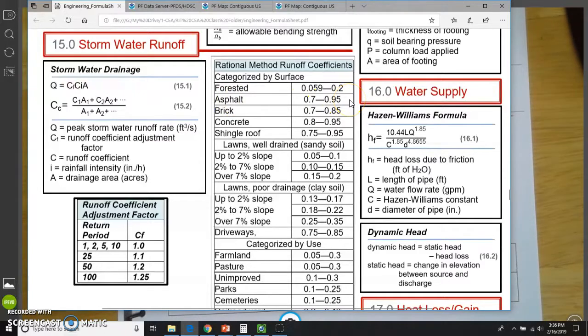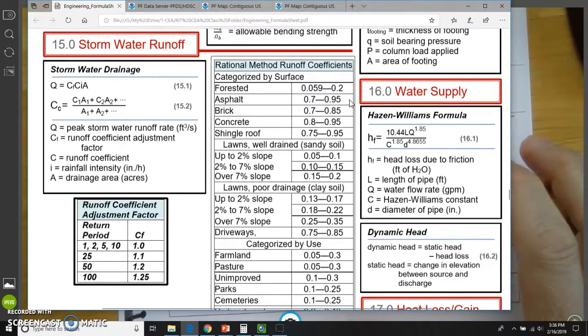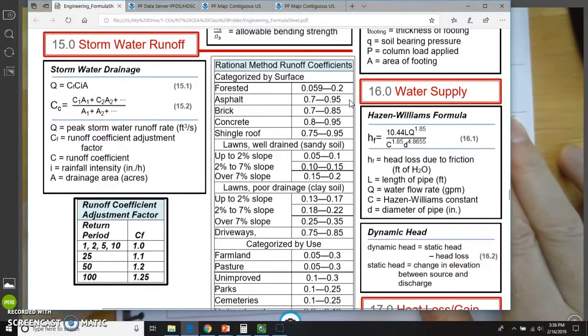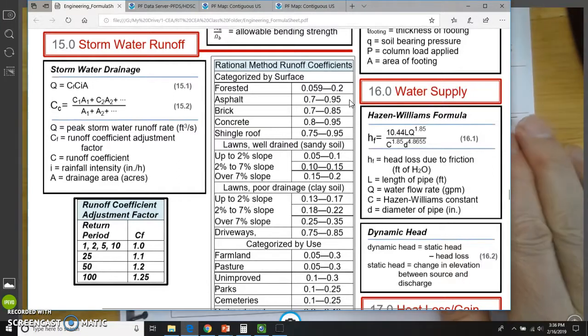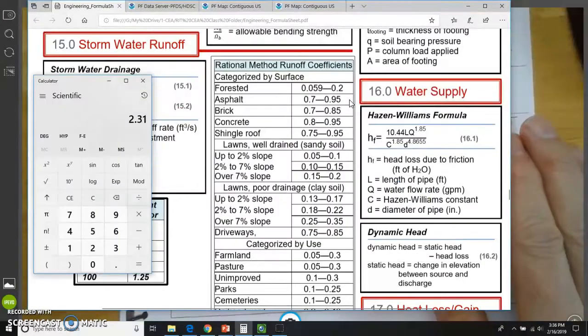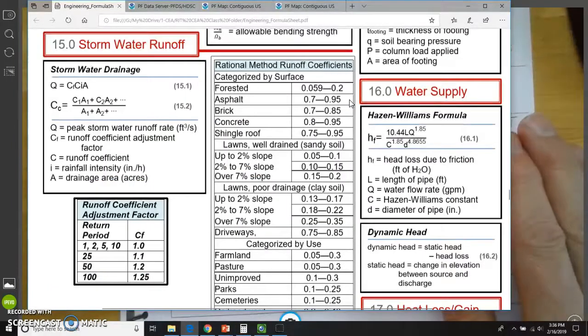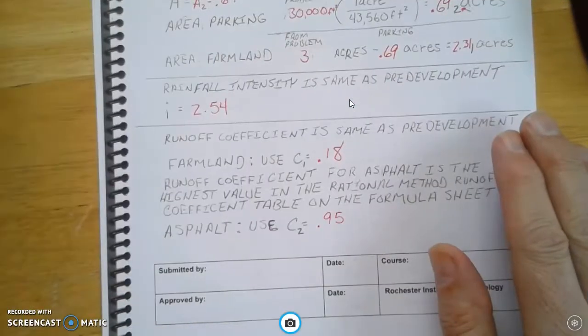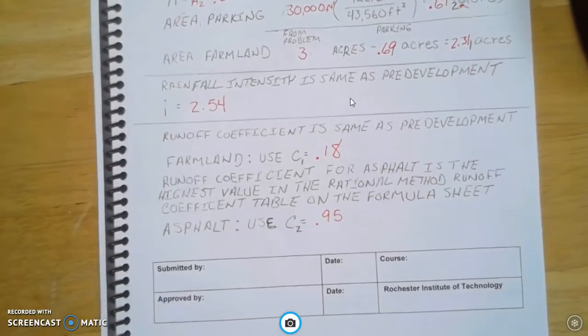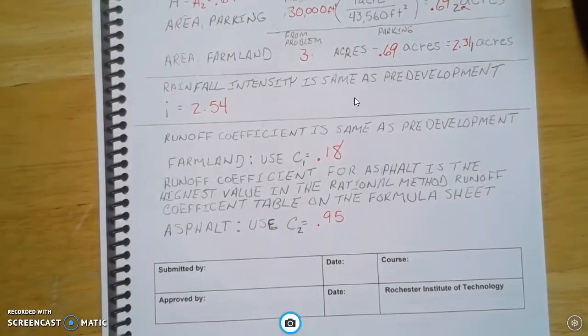And when we did farmland, we took an average of the two. But here, we're going to just use the highest value for C2. So that value is going to be 0.95. And the reason we use that highest value is because we want to look at the worst case scenario.